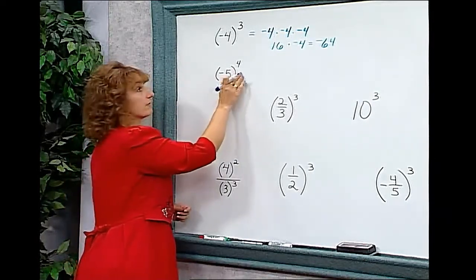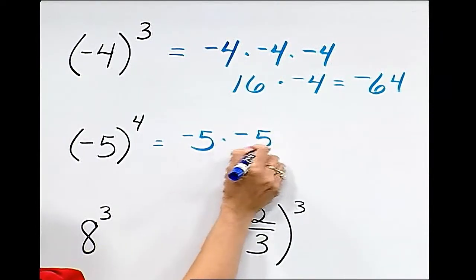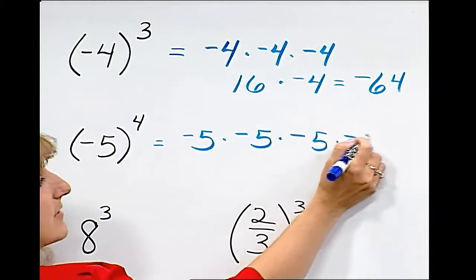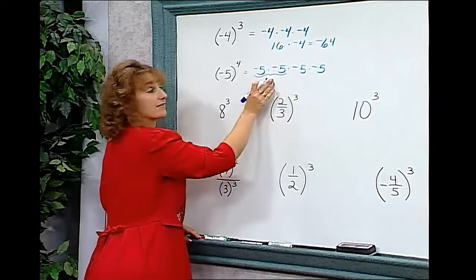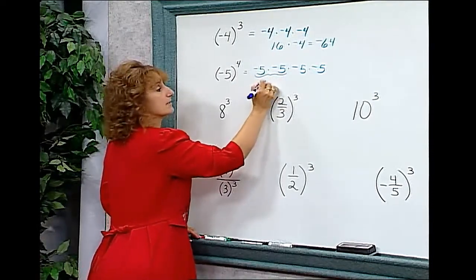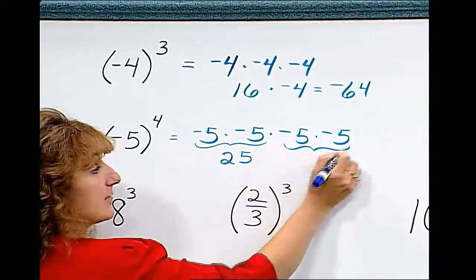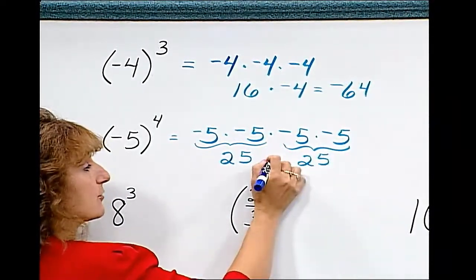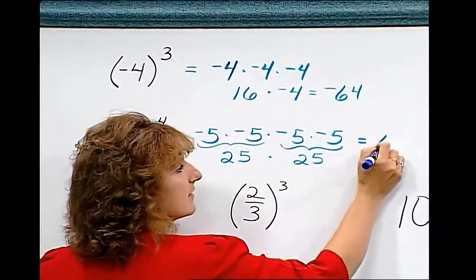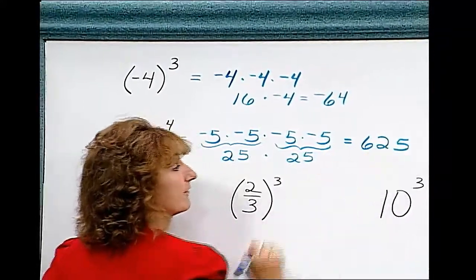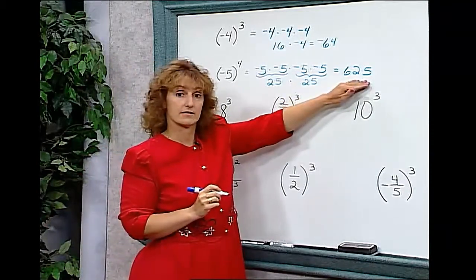Negative 5 to the fourth power means negative 5 times negative 5 times negative 5 times negative 5. If we group these, then negative 5 times negative 5 is positive 25, and negative 5 times negative 5 again is positive 25. And 25 times 25 is positive 625. So in this case, although we started with a negative base, we came out with a positive answer.